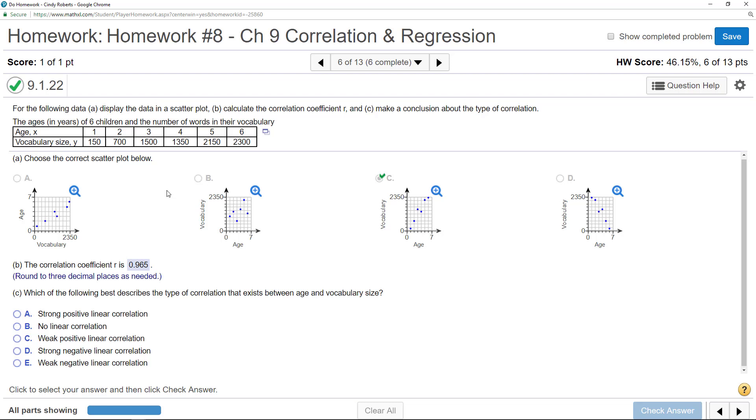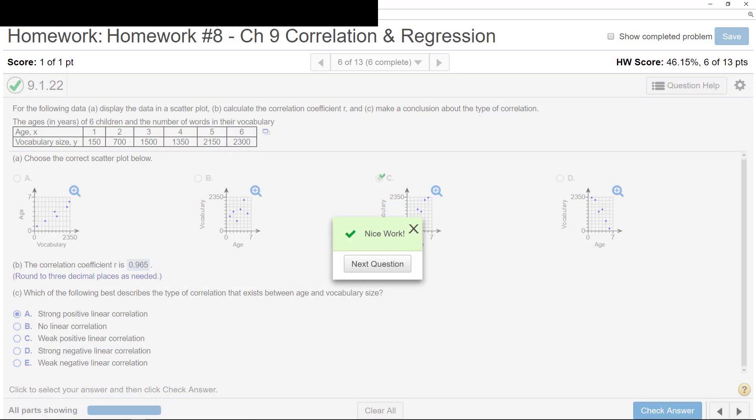And remember, as we talked about, if you have a correlation coefficient value that is close to negative 1 or positive 1, that's a very strong correlation, because that's very close to 1. In this case, it is positive. Why is it positive? Well, my correlation coefficient's positive, but also as my X values go up, as age goes up, their vocabulary goes up. So this is definitely a strong positive linear correlation.